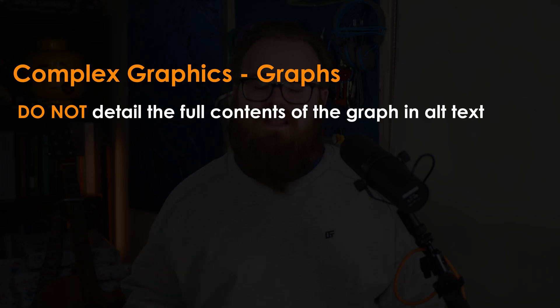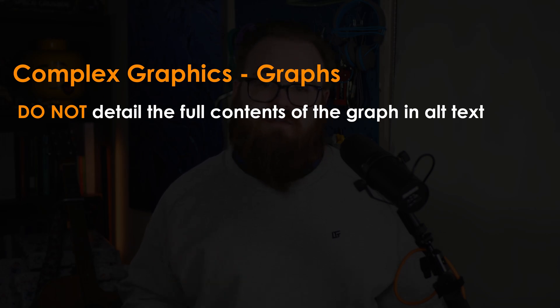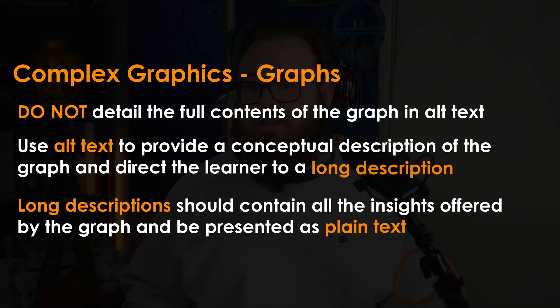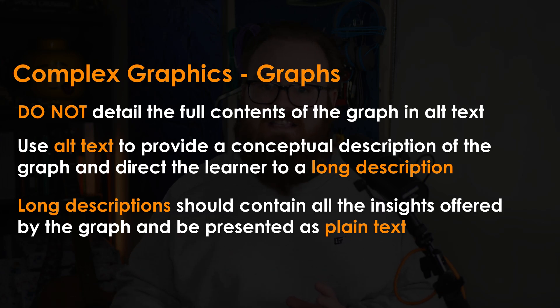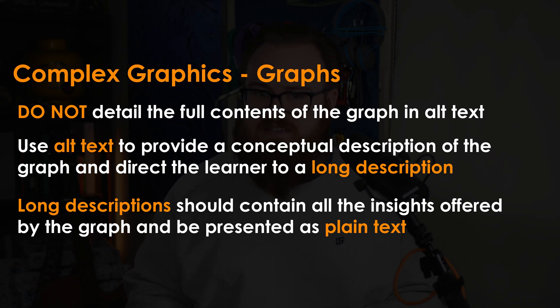An important group of visuals to consider, especially in the learning world, are complex graphics. Some of the most common examples are graphs — be that a bar graph, pie chart, whatever it might be. It is not reasonable or practical to fully explain a complex bar graph in the alternative text. But what we can do is provide an understanding of what the graph is at a conceptual level and direct the learner to a long description. A long description, as the name suggests, is a fully written, detailed explanation of all the data, all the information, all the insights present in the graph. This needs to be an option the user can easily get to, usually via some hyperlinked text next to or underneath the graph, in very simple, clear, plain text.